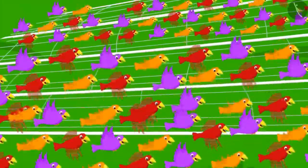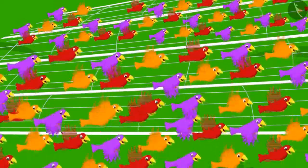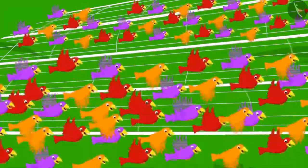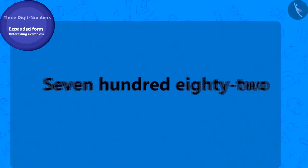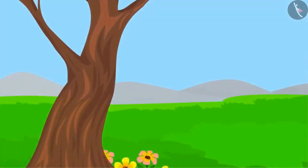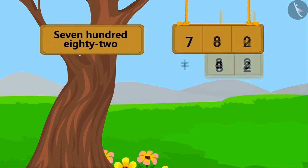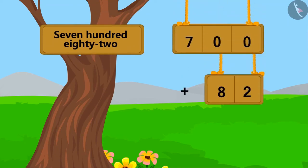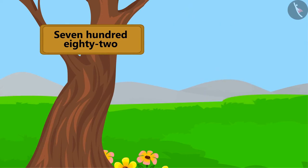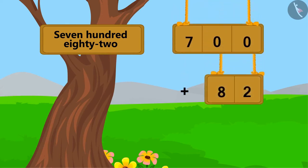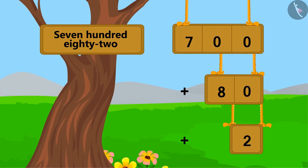The net was very heavy and the tiny birds could not lift it. Then they decided to use the trick of flying away together with the net. There were 782 birds. Write the expanded form of this number with me: 782 is 82 ahead of 700, so we can write it by adding 82 to 700. We can also write 82 by adding 2 to 80.